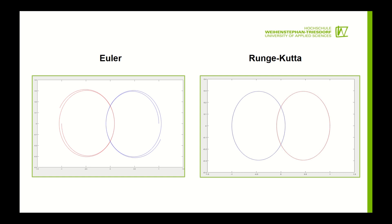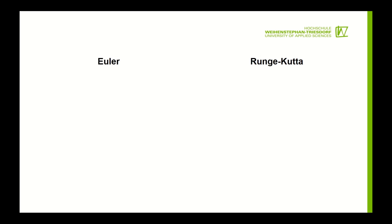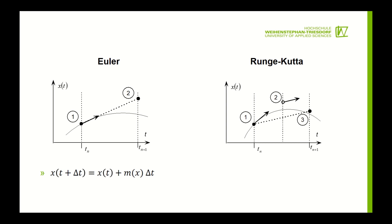This is due to the way these methods approximate the next position of the bodies. Runge-Kutta is more accurate because it calculates the behavior of the bodies in a half time step and applies this behavior for the whole time step.